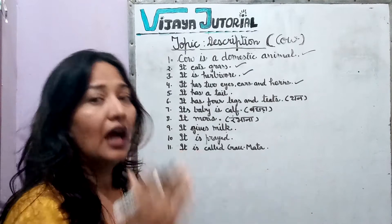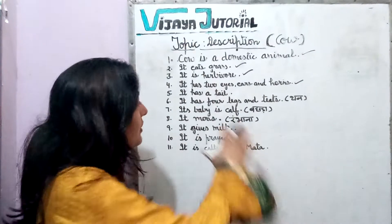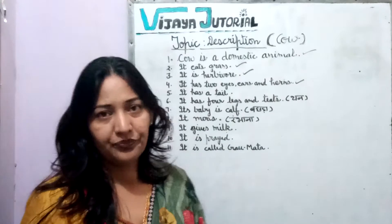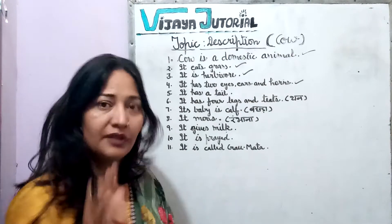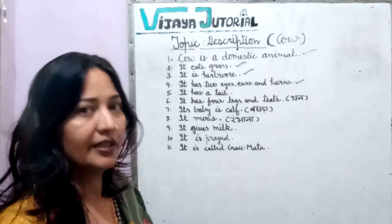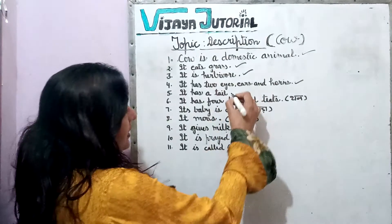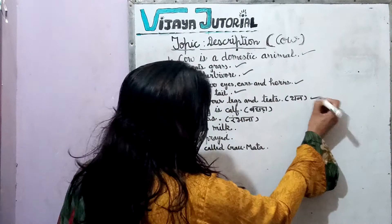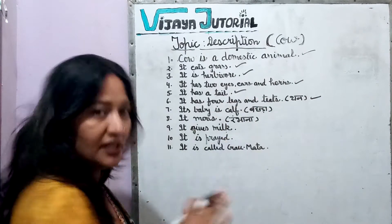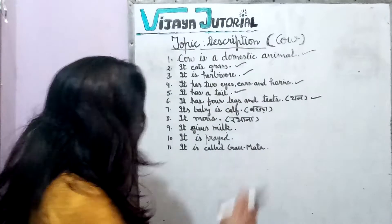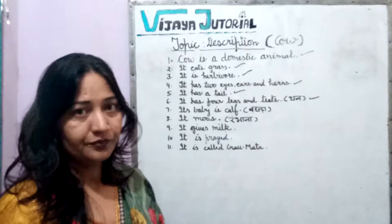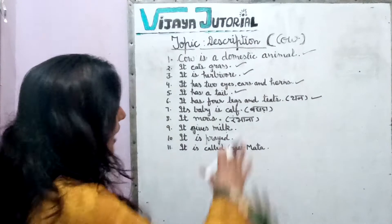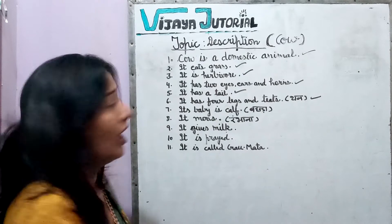It has a tail, four legs, and teeth. Teeth here means hooves — the cow has four legs and four hooves. You can make these into two separate sentences if needed.